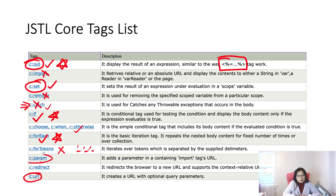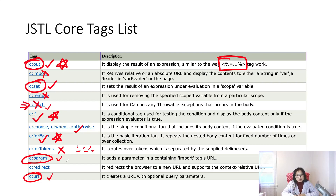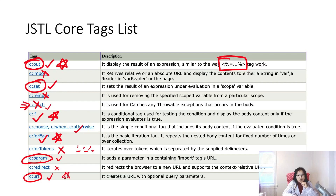c:url is actually very helpful — I use it a lot. It helps you generate an absolute URL with optional query parameters, and it's used together with c:param. c:redirect lets you redirect to another URL, but I never used that one. The tags you will use the most are c:out, c:if, c:forEach, and c:url along with c:param. The others are not used as often, and the demos I'll show you will focus on the most-used ones.